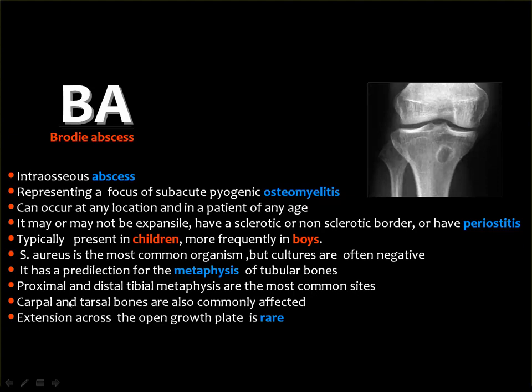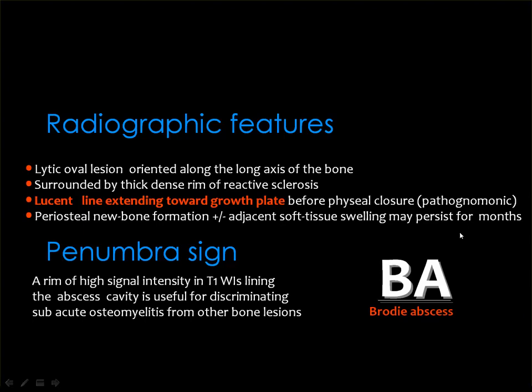Brodie's abscess occurs in the metaphysis of tubular bones; the most common sites are the proximal and distal ends of the tibia. The carpal and tarsal bones may be affected, but extension across the growth plate is rare. The abscess appears as an osteolytic lesion surrounded by reactive bone sclerosis. A lucent line extending towards the growth plate before epiphyseal closure is considered pathognomonic for Brodie's abscess, sometimes with periosteal new bone formation and adjacent soft tissue swelling.